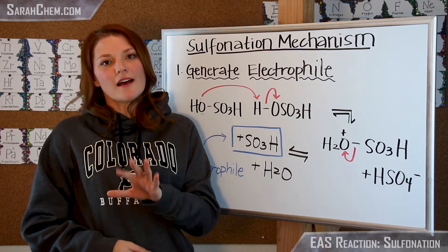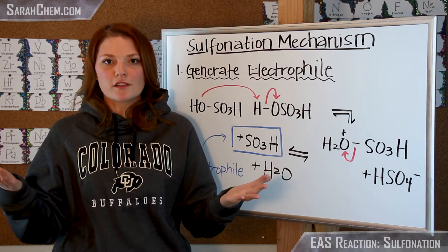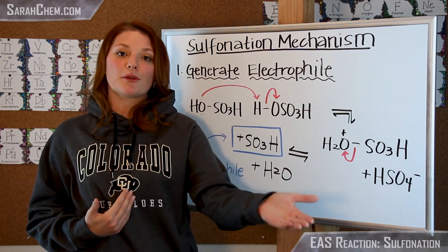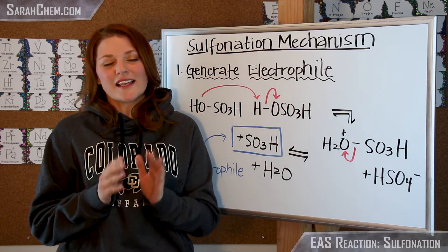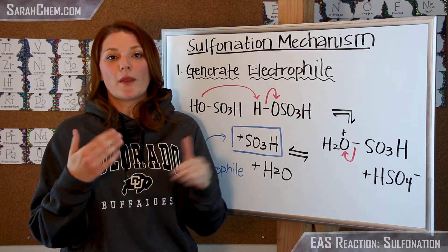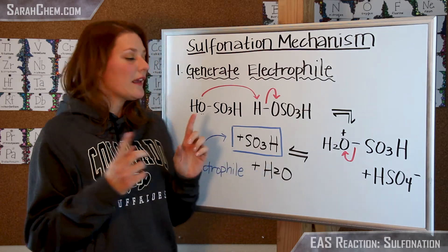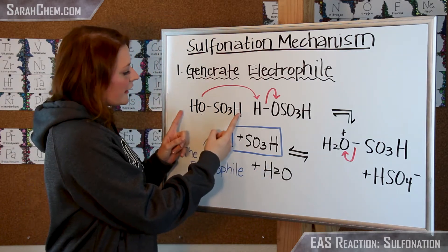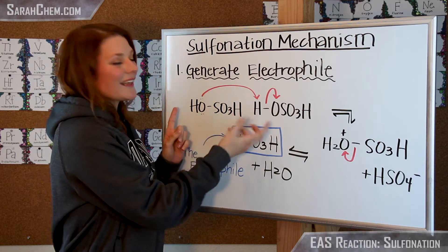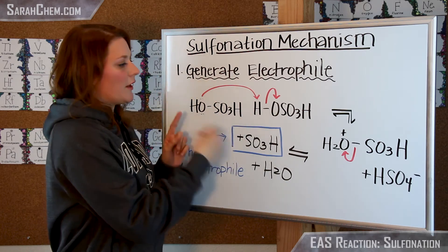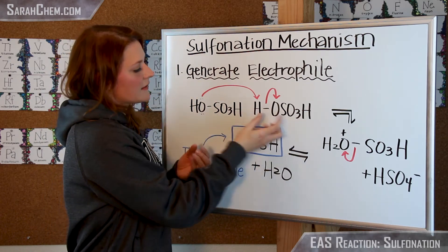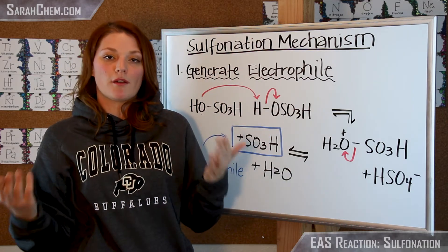Now it can be a little confusing because we call sulfuric acid an acid, which means that it's typically going to be a proton donator. But in this case, we create a circumstance where it's so concentrated that we actually see alternate behavior — this is going to behave like a Brønsted-Lowry base. It's going to come and accept a proton. The other sulfuric acid will behave as we expect an acid, where it's going to be able to donate a proton off.